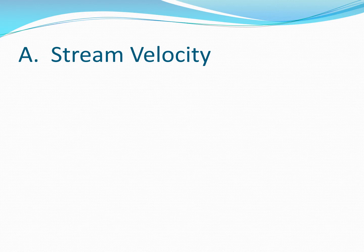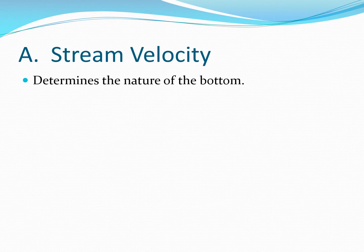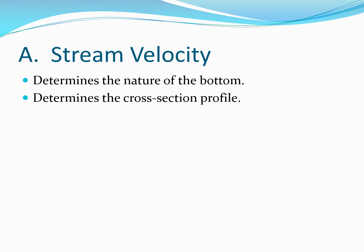The first characteristic we're going to look at is stream velocity. Stream velocity determines the nature of the bottom — what's on the bottom. Fast-moving streams would have large things on the bottom, like boulders. Slow-moving streams might have sand, silt, or clay. It's also going to determine the cross-sectional profile. A fast-moving stream tends to have a V-shaped profile, and a slow-moving stream tends to have more of a flat bottom.